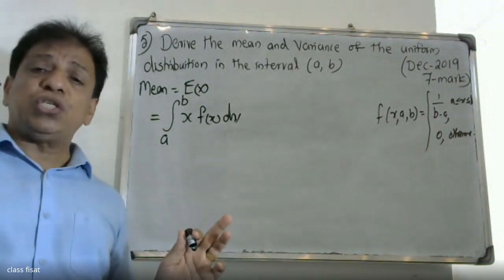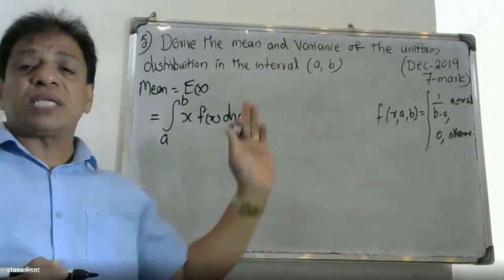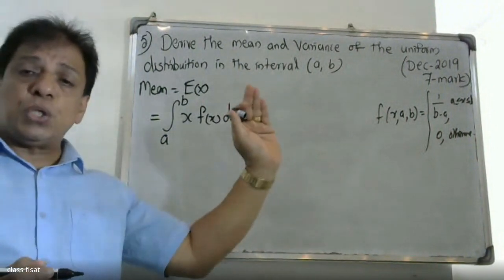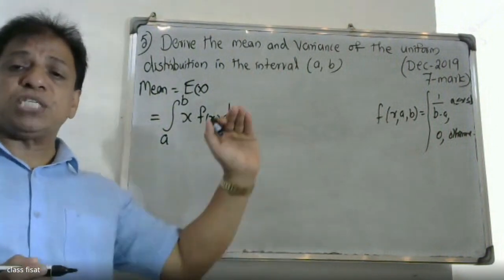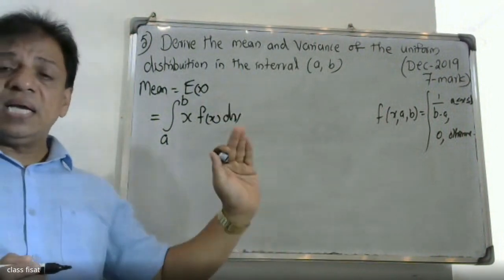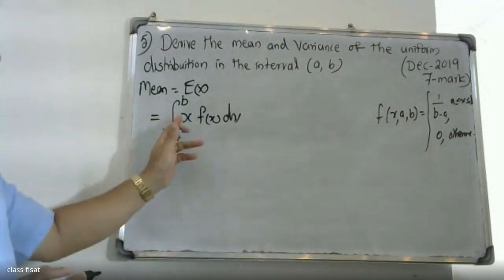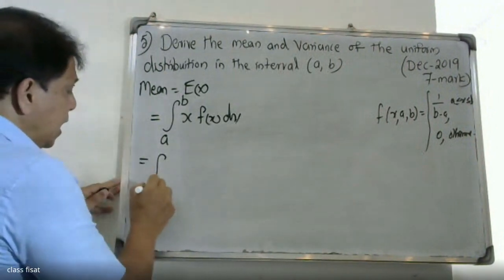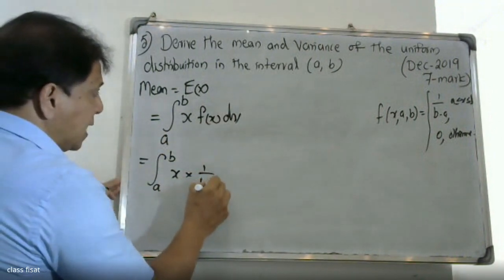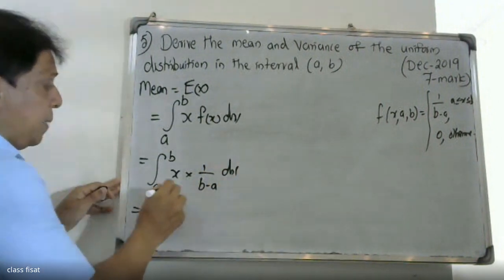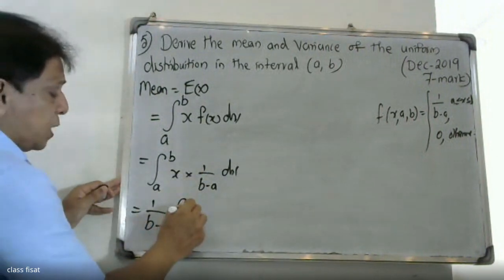The general formula is the integral from minus infinity to plus infinity of x times f(x) dx, but for the uniform distribution this reduces to the integral from a to b. So we compute the integral from a to b of x times 1 by (b minus a) dx, and since 1 by (b minus a) is a constant, we get 1 by (b minus a) into x squared by 2.